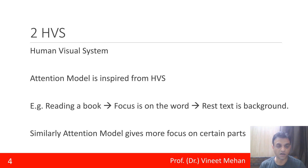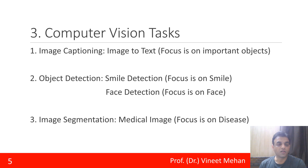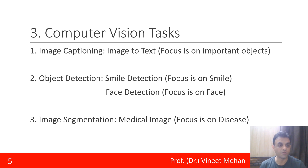The various computer vision tasks that can be achieved using an attention model include: first, image captioning — converting image to text, where the focus is on the important objects present in the image. Second, object detection, such as smile detection where focus is on the smile, or face detection where focus is on the face.